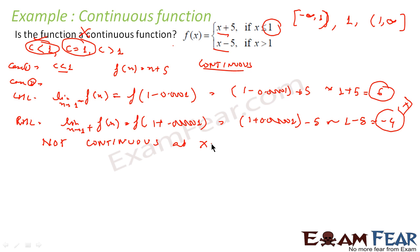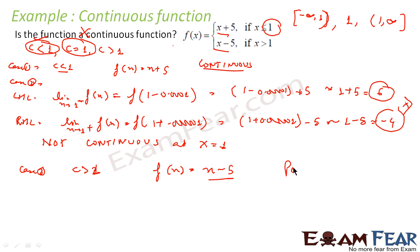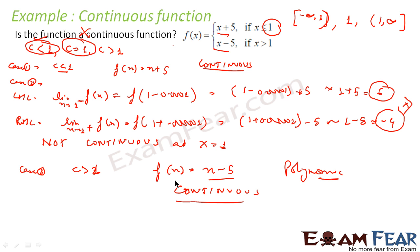Since the limit itself doesn't exist, forget about the limit being equal to f(c). So the function is not continuous at x=1. For Case 3, where c is greater than 1, the function f(x) = x - 5 is a polynomial function and is therefore continuous.